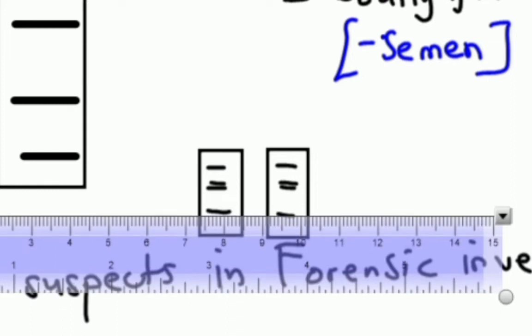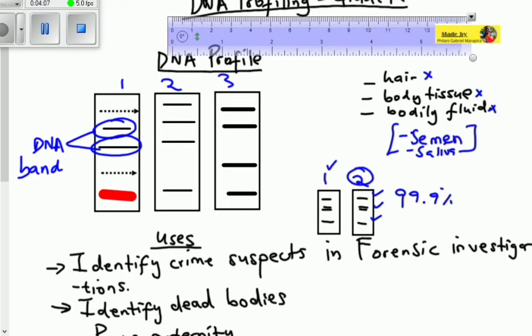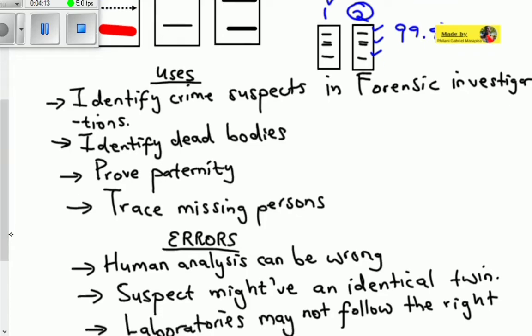This gives us more evidence. If we take these evidences—one, two, three—three out of three tells us these are matching profiles. The uses of DNA profiling include identifying crime suspects. Most of the time, investigators collect DNA at a crime scene to go to a laboratory which tests if the DNA matches with any suspect.